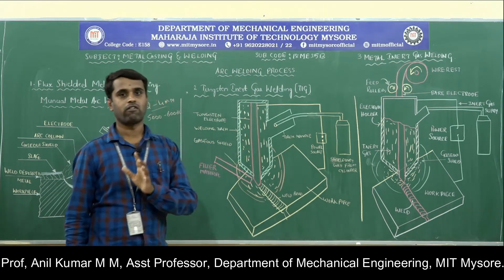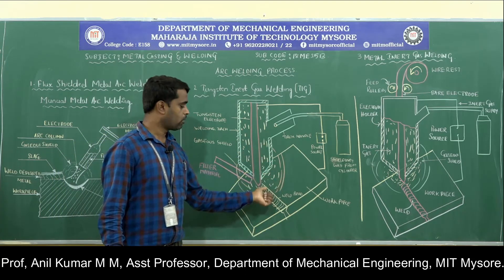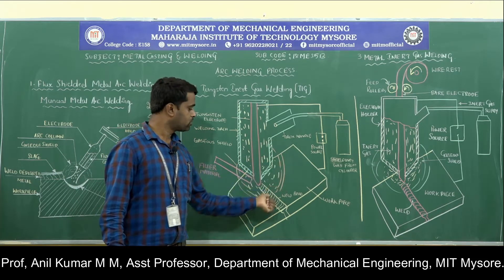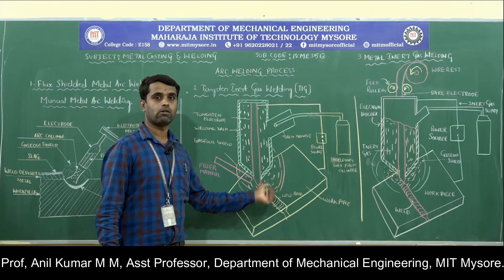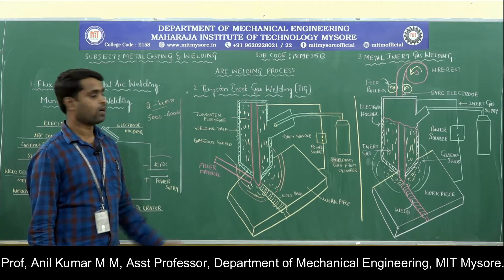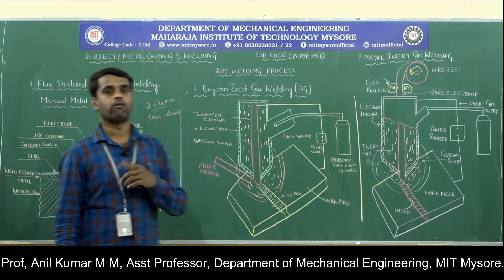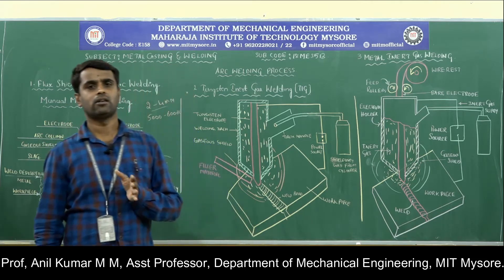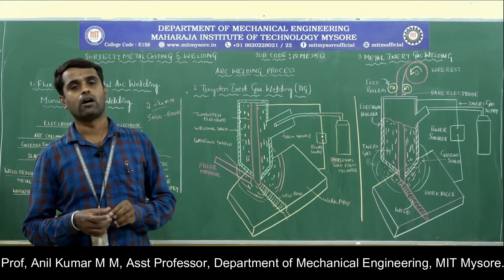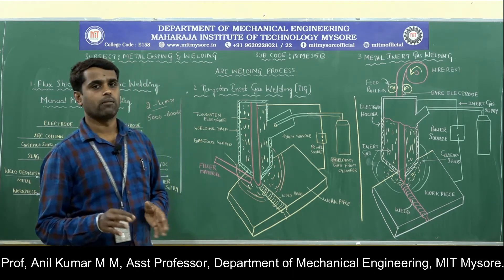No flux is used in TIG welding. Instead, inert gases are used to protect the molten metal from the atmosphere. The inert gases decompose and form a gaseous shield protecting the molten metal. AC current is preferred for welding magnesium or aluminum alloys, while DC current is applied for welding stainless steel, copper, and nickel alloys.